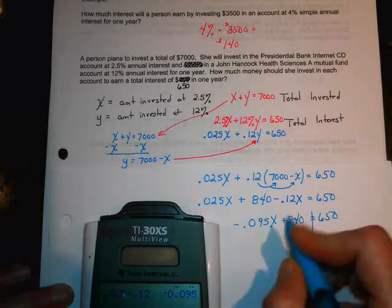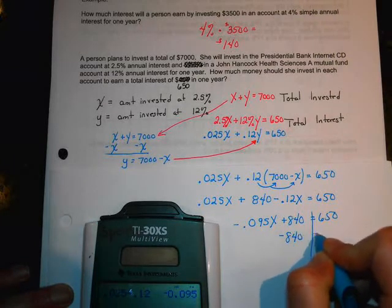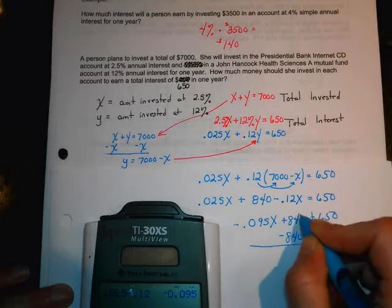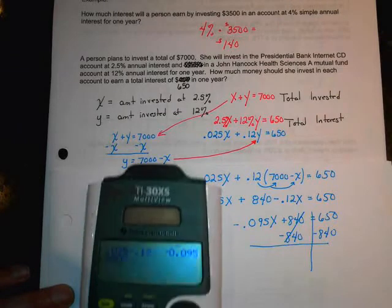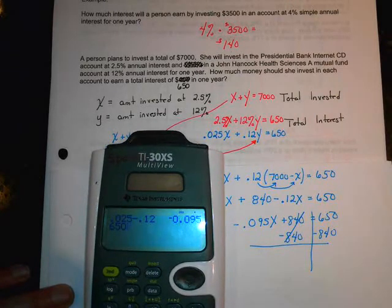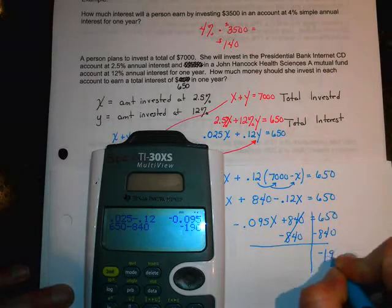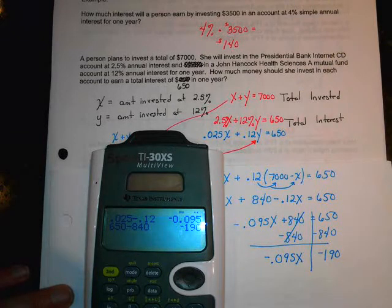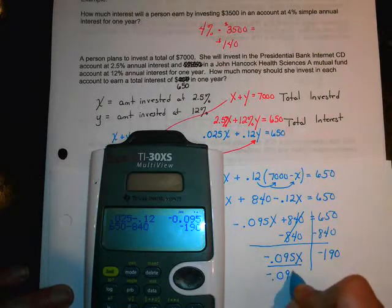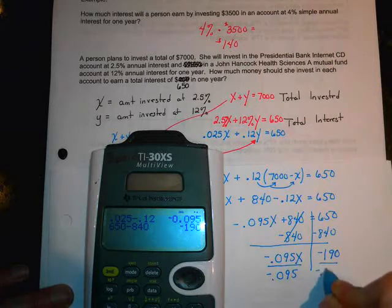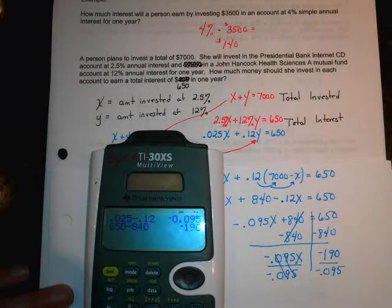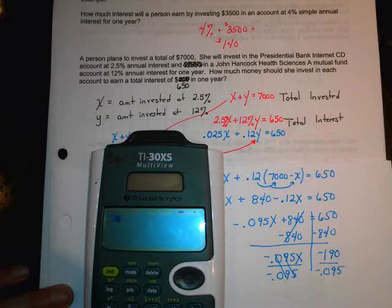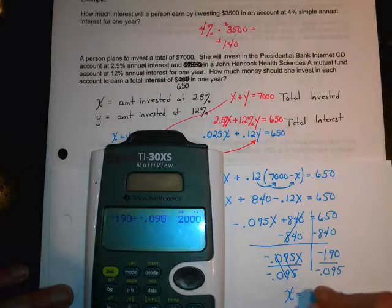Let's subtract 840 from both sides. I'm going to do this on my calculator. So, 650 minus 840 gives us negative 190. And over here, we still have the 0.095X. And then to get X by itself, I'm going to divide. So, it looks like X is going to equal negative 190 divided by negative 0.095. And it looks like X is going to equal $2,000.